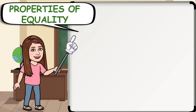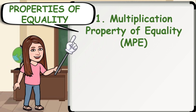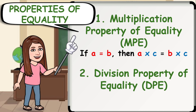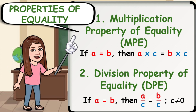To solve multiplication and division on linear equations in one variable, you must use the following properties of equality. Number 1: Multiplication Property of Equality or MPE, which states that if A is equal to B, then A times C is equal to B times C. Number 2: Division Property of Equality or DPE, which states that if A is equal to B, then A divided by C is equal to B divided by C, where C is not equal to 0. Note that multiplication and division are inverse operations of each other. If you have a number being multiplied that you need to move to the other side, you divide it from both sides.